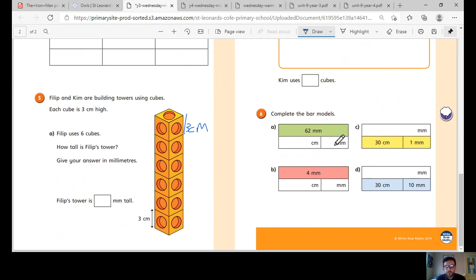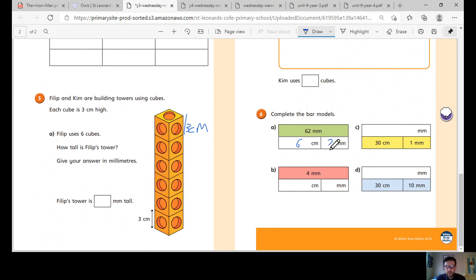And then completing our bar models, what we did yesterday, we've practiced this. 60 millimetres, so the 60 is 6 centimetres, and there's 2 millimetres left. You can complete the next ones.